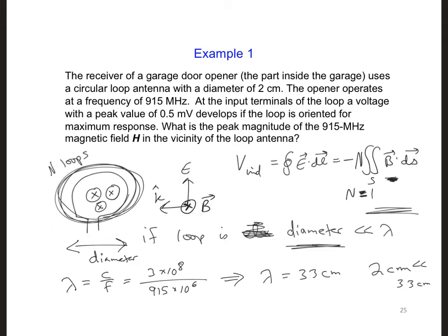So we can say that the loop is electrically small, and we can assume the B field is constant over the area of the loop, which means we can turn this integral into just multiplying B times A, the area of the loop.